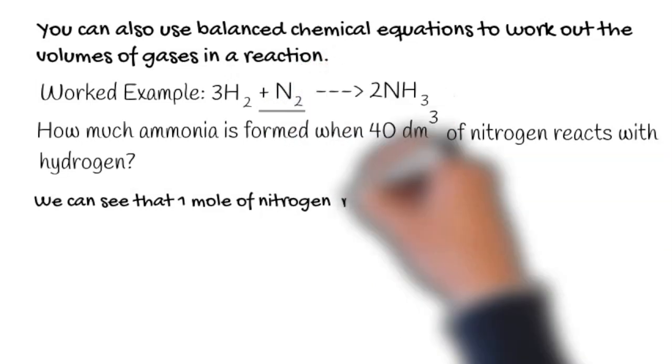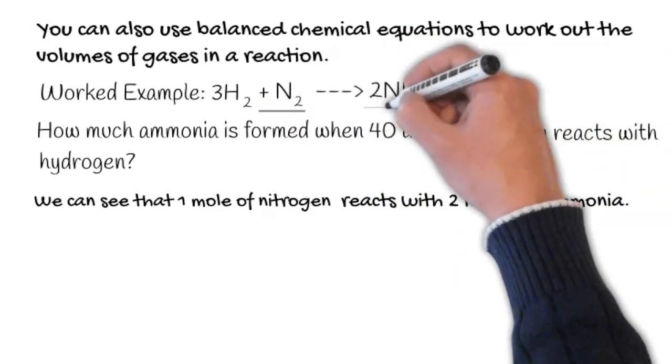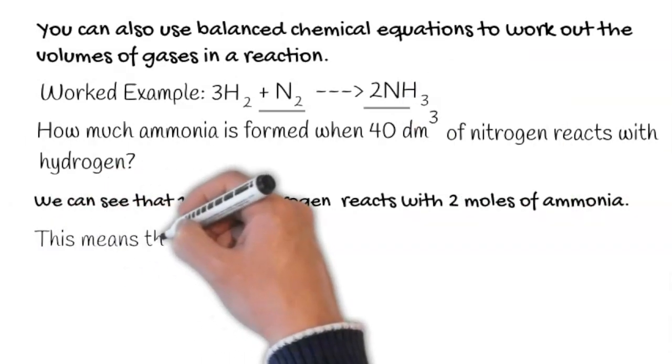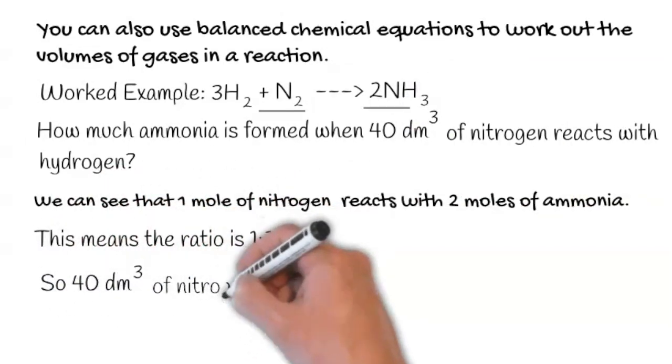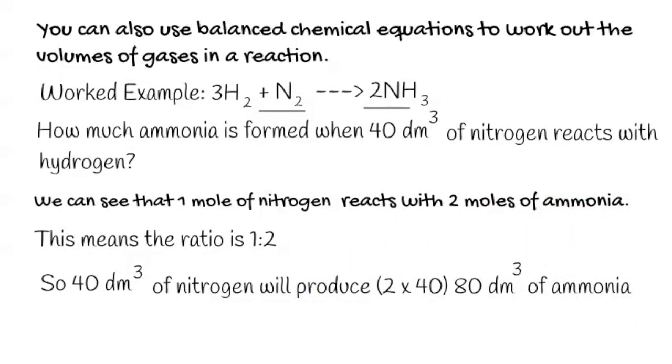We can see that one mole of nitrogen, because there's no number after it, reacts to form two moles of ammonia, because there's a number two before it. This means the ratio is one to two, which means that 40 decimeters cubed of nitrogen will produce two times 40, so 80 decimeters cubed of ammonia.